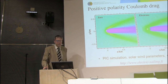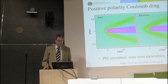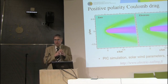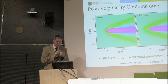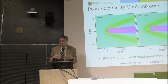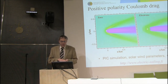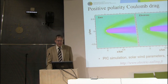Let's start from the physics. The positive polarity Coulomb-Drag effect means that if one puts a charged wire or tether in flowing plasma — for example in the solar wind, which flows at 400 to 800 kilometers per second — the plasma gets deflected by the electric field of this tether.